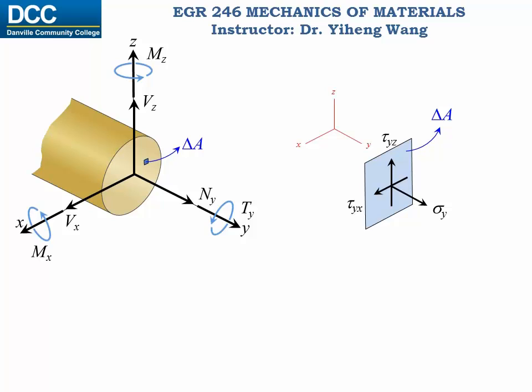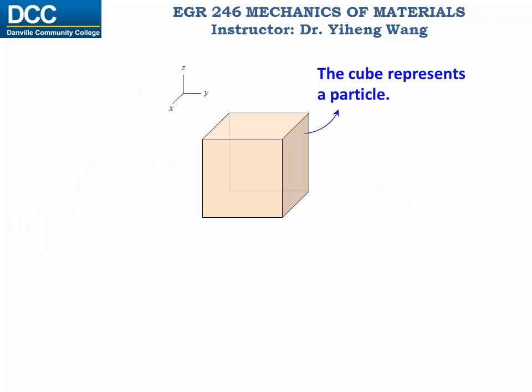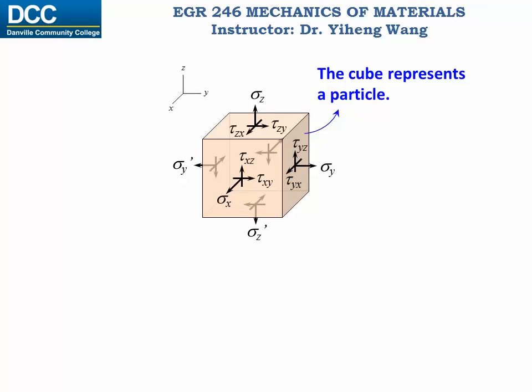But does a particle only have one surface? Normally a particle is represented by a cube with infinitesimal sides. We know that a cube has six surfaces: top, bottom, front, back, left, and right. Therefore, on each surface there is a normal stress sigma that is perpendicular or normal to it, and also two shear stresses tau that are tangential to it. We call this the general state of stress of a particle.